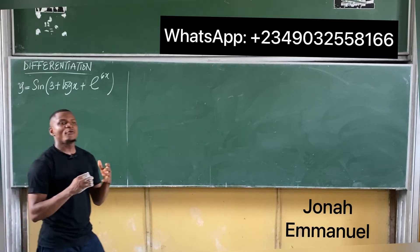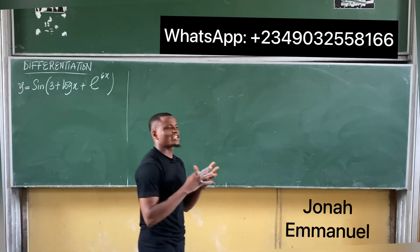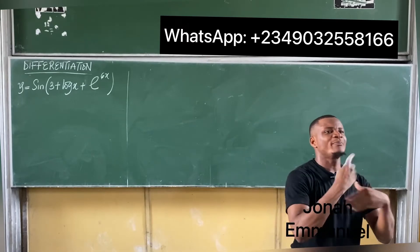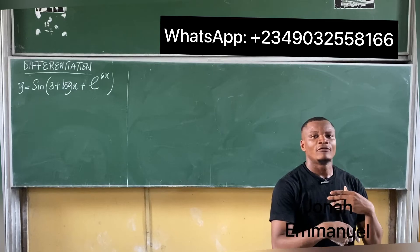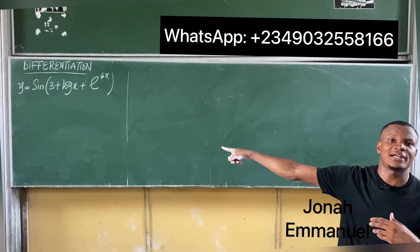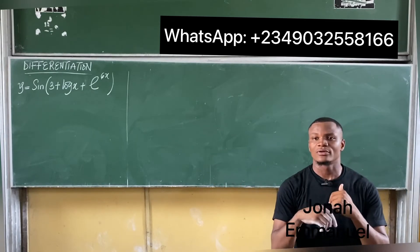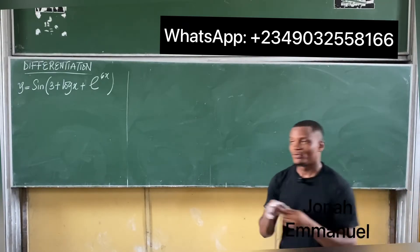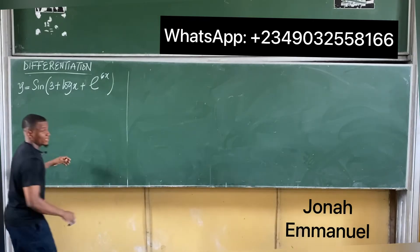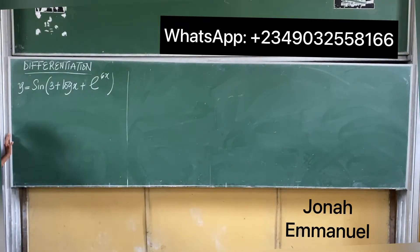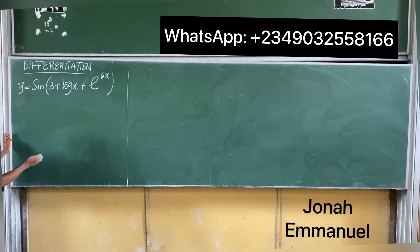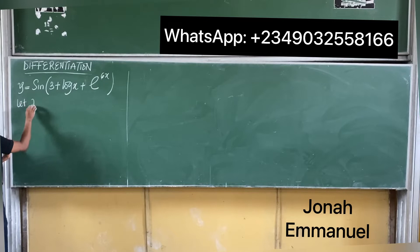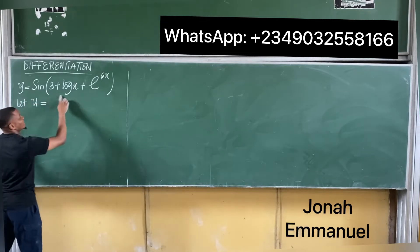Please check — when we differentiate trig functions like sine and cosine, which method do we use? We use the chain rule. So for this problem, I'm using chain rule. What's my chain rule? I'll say: let u be equal to what's in the brackets.